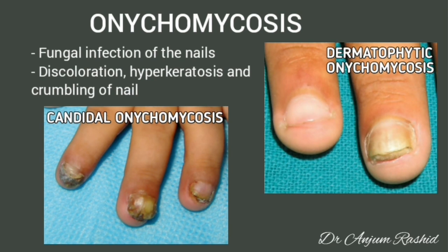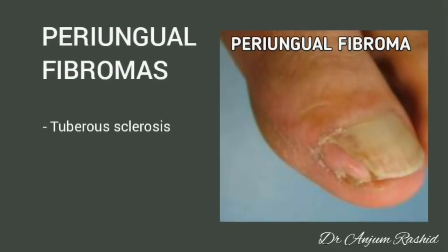Onychomycosis: it is a fungal infection of the nails. There is discoloration, hyperkeratosis, and crumbling of the nails. Periungual fibroma: it is a soft tissue mass growing at the lateral edge of the nail and is a characteristic feature of tuberous sclerosis.